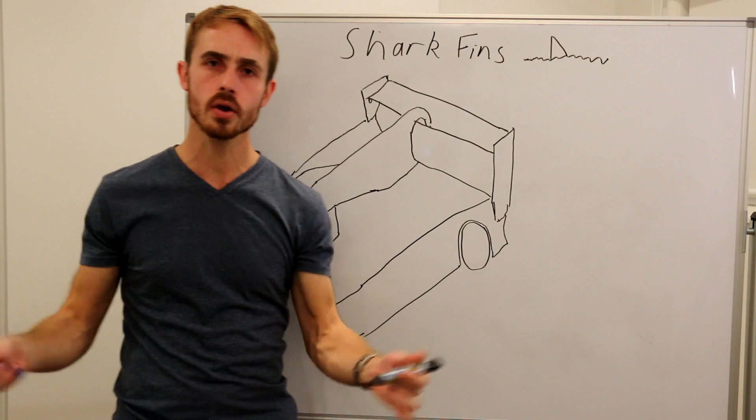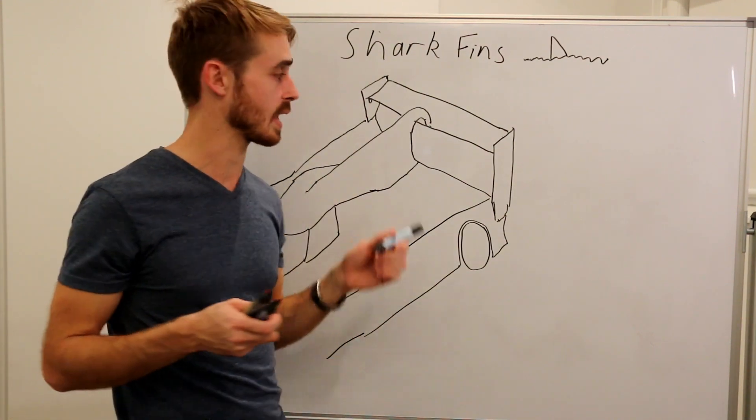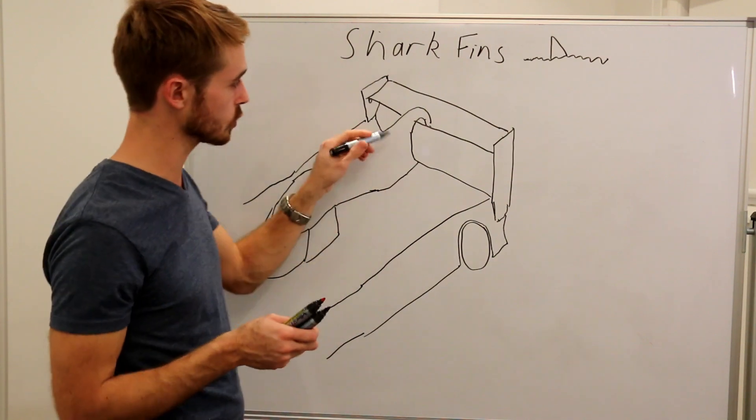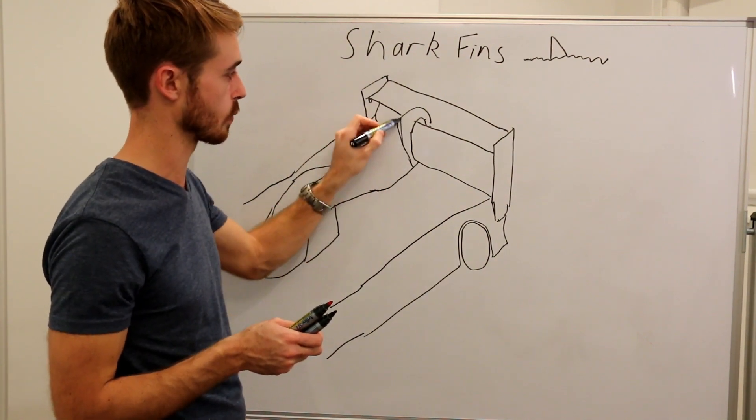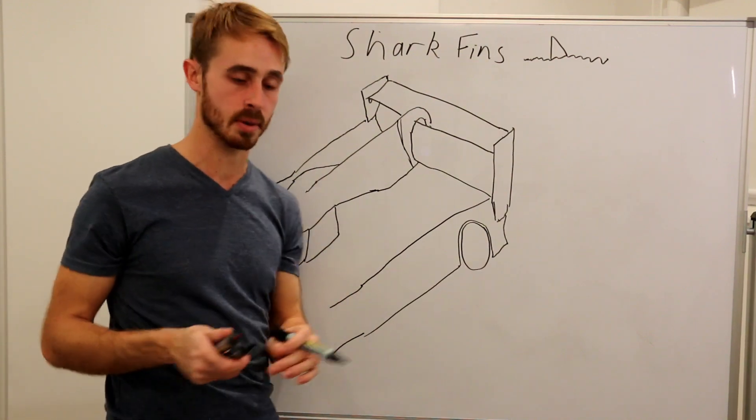But of course they're not just there for structural reasons, they're also there and really dominantly there for aerodynamic reasons, because obviously if you just worry about the structure you could just put a swan neck wing mount there and call it a day. So there's a few different aerodynamic purposes of it.